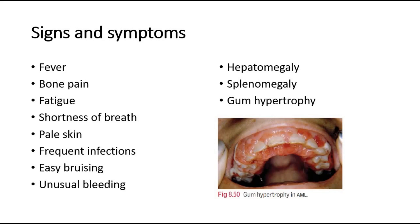On physical examination, we may expect to see hepatomegaly, which is liver enlargement, splenomegaly, which is an enlarged spleen, and also signs of gum hypertrophy, which can be seen in acute myeloid leukemia.